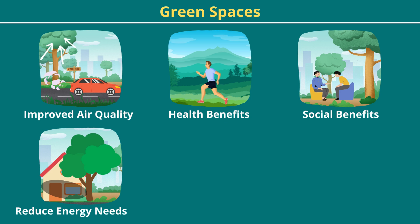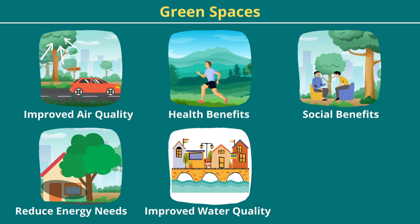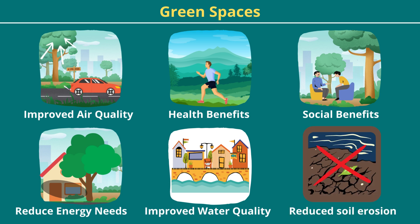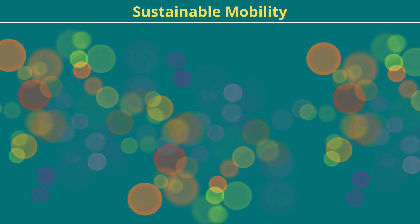Reduced energy consumption: trees provide shade and reduce the heat buildup in the surrounding area, helping to reduce the electricity consumption used for air conditioning. Improved water quality: green areas help to reduce the quantities of pollutants arriving into the waterways and the underground water supply. Reduced soil erosion: trees and plants help to keep the soil in place.